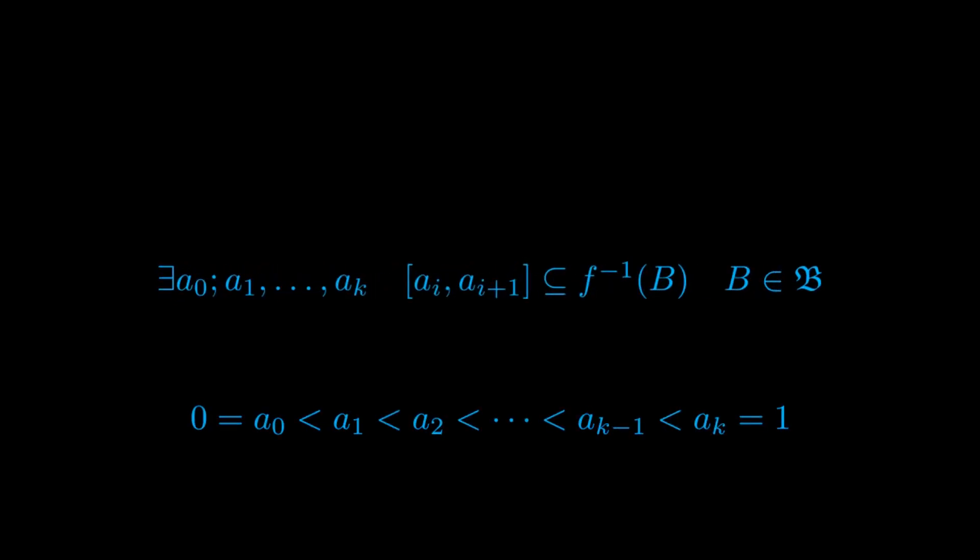From this it follows that there will be finitely many a_0, a_1, ..., up to a_k, with a_0 equal to 0 and a_k equal to 1, and with a_0 < a_1, a_1 < a_2, and so on, such that the compact interval [a_{i-1}, a_i] is in the pre-image under F of some ball B in our cover B.